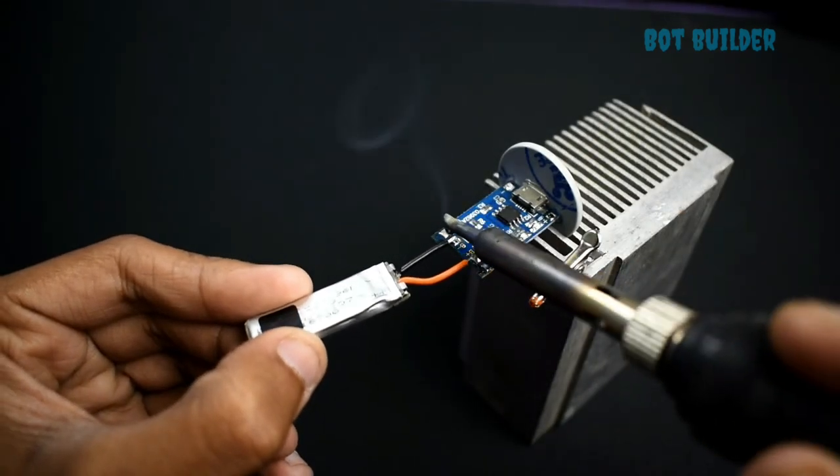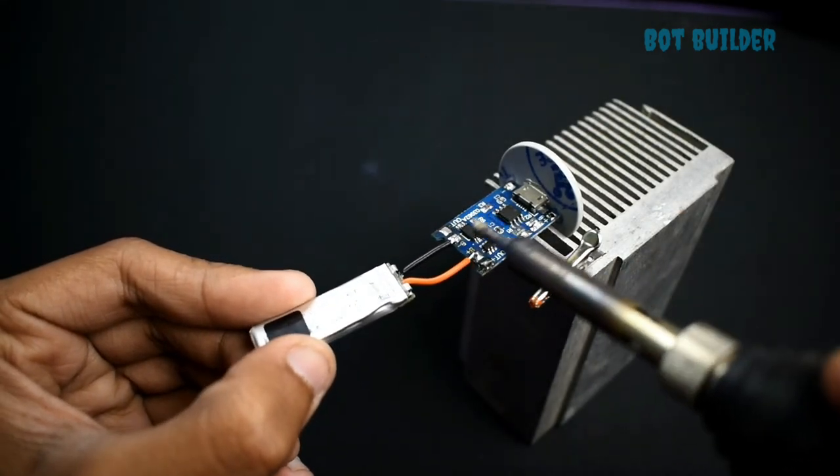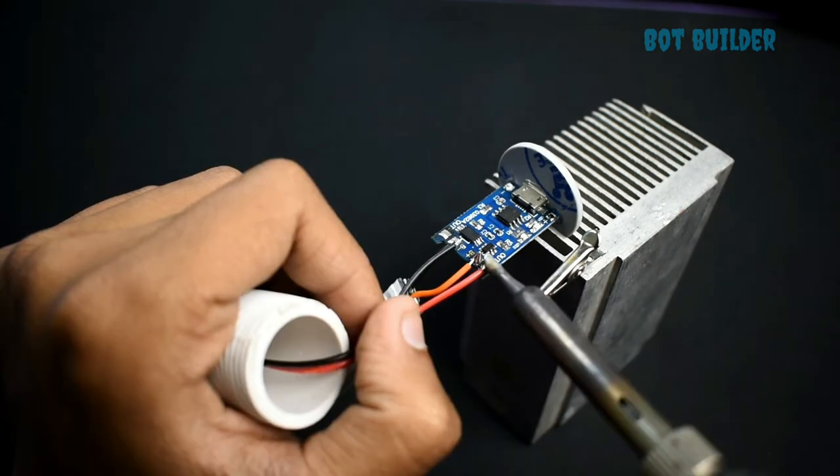Solder the positive and negative wires for the battery input. Then, solder the gear motor wires.